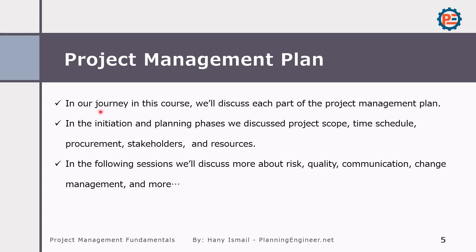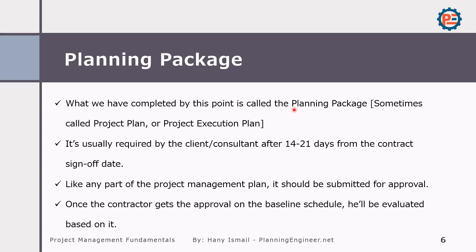In our journey in this course, we will discuss each part of the project management plan. In the initiation and planning phases, we discuss the project scope, time schedule, procurement, stakeholders, and resources. In following sessions, we will discuss more about risk, quality, communication, change management, and much more. What we have completed by this point is called the planning package — sometimes called the project plan or project execution plan. It is usually required by the client and consultant after 14 to 21 days from the contract sign-off date.